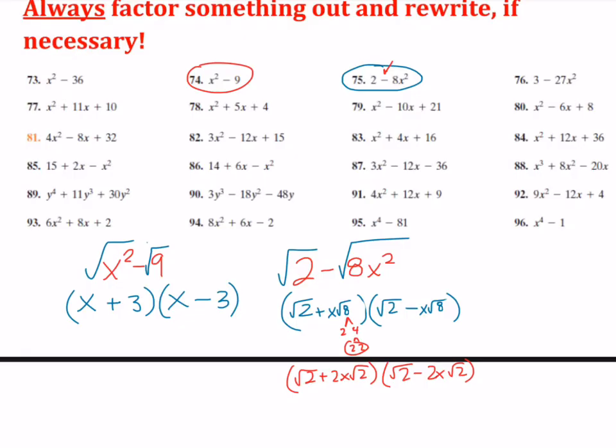So number 76. So it would be 3 minus 27x cubed. If you wanted to factor this with the difference of two squares, well, first of all, I would actually factor out a 3 to start. So it would be 1 minus 9x cubed.